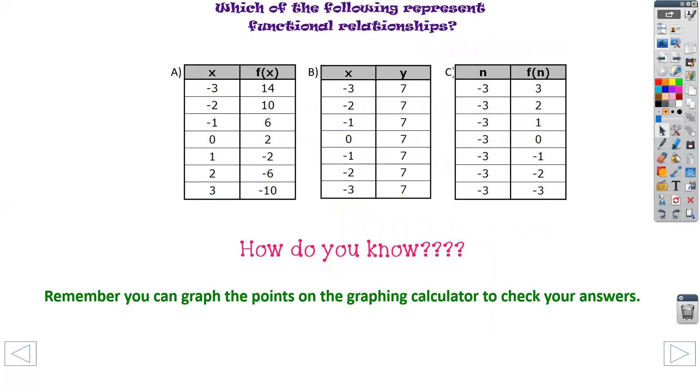So let's look at this question really quickly. It says, which of the following represents a functional relationship? So let's look at A. Do any of those X's repeat? No, they don't. So A is a function. Let's look at B. Do any of these X's repeat? Remember, we're not worried about the Y's, only the X's. Yep. I see a negative 3 and a negative 3. So this is not a function.